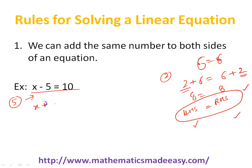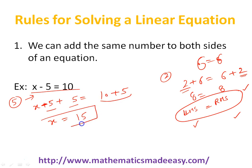So what will happen? x minus 5 plus 5 on the left hand side, and plus 5 on the right hand side. The minus 5 and plus 5 become 0, so it becomes x equal to 10 plus 5, which is 15. So x equal to 15 is the solution of this equation. Using this rule of adding the same number to both sides, we have figured out the solution of the linear equation. The rule is that you can add any number to both sides of a linear equation.